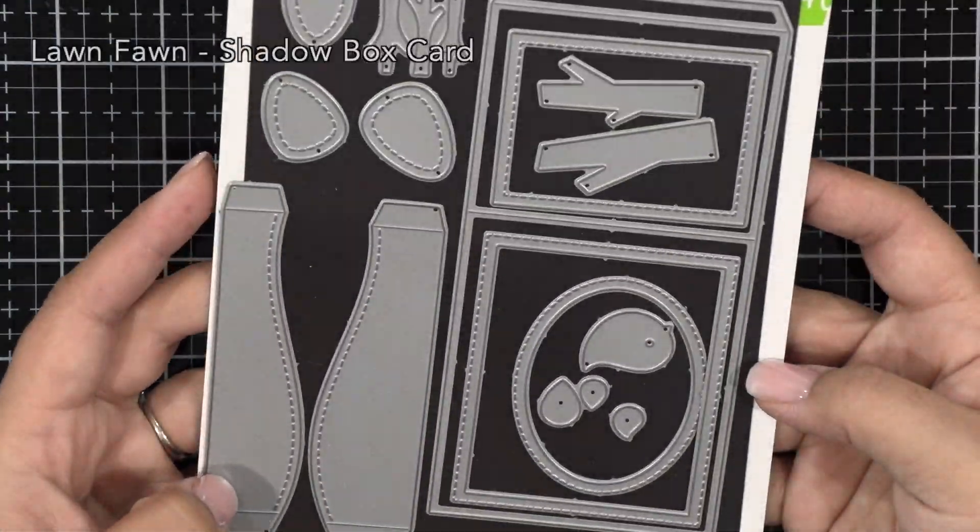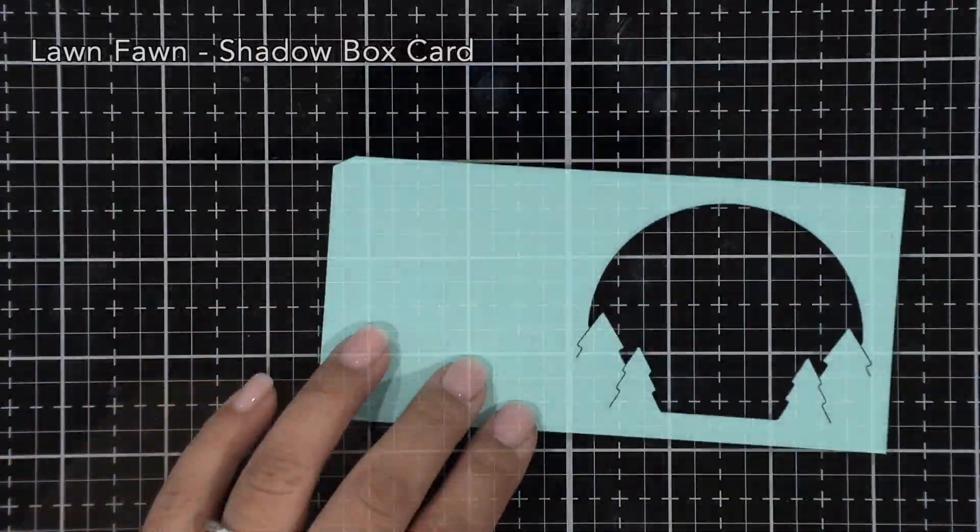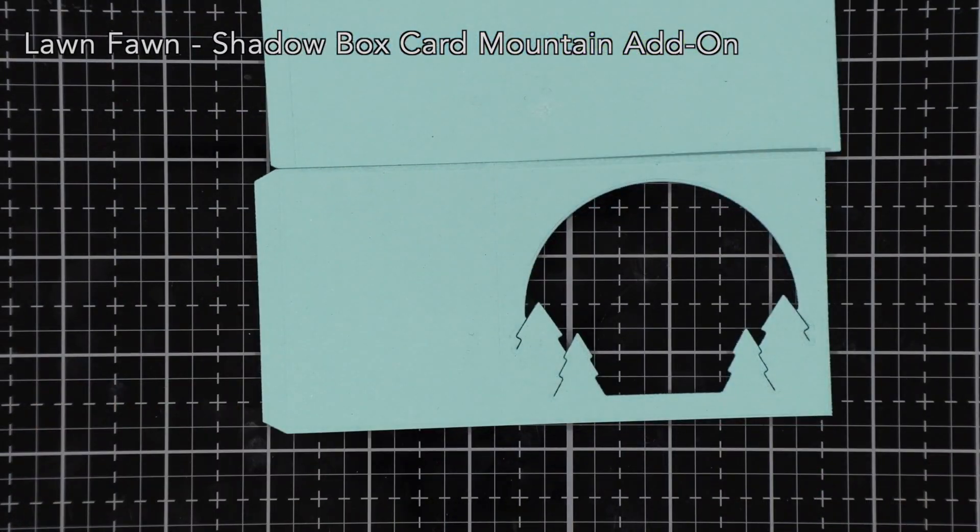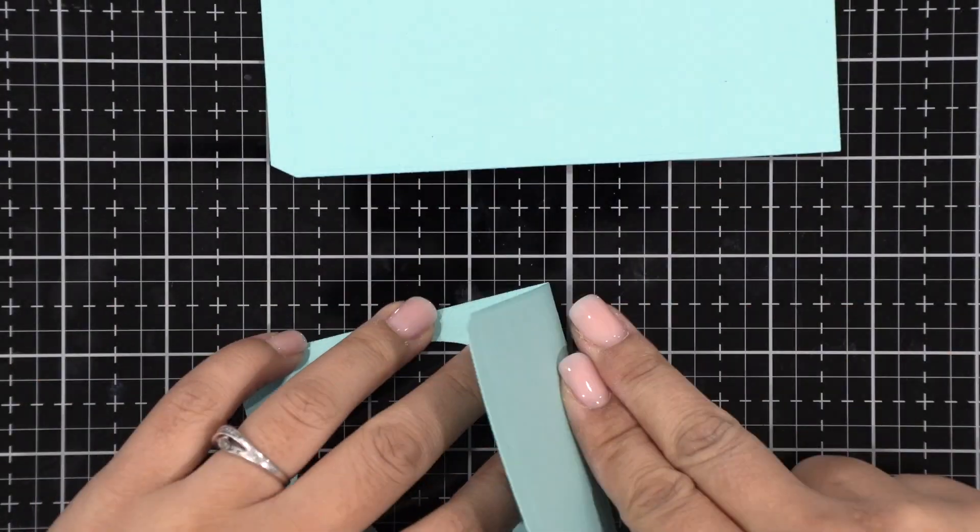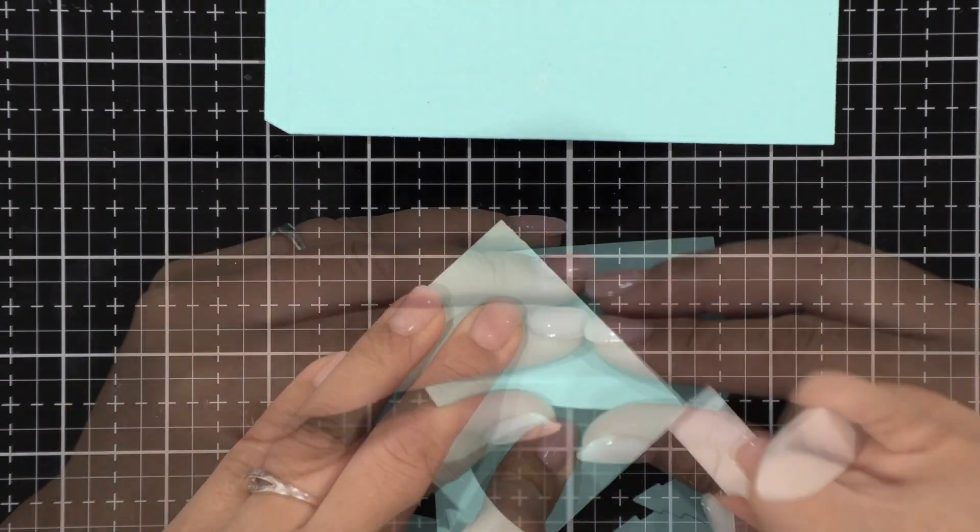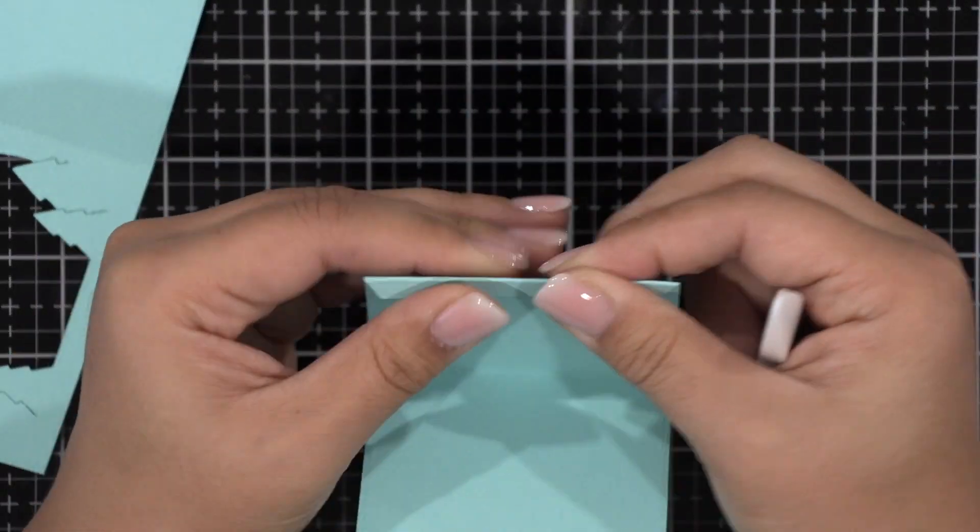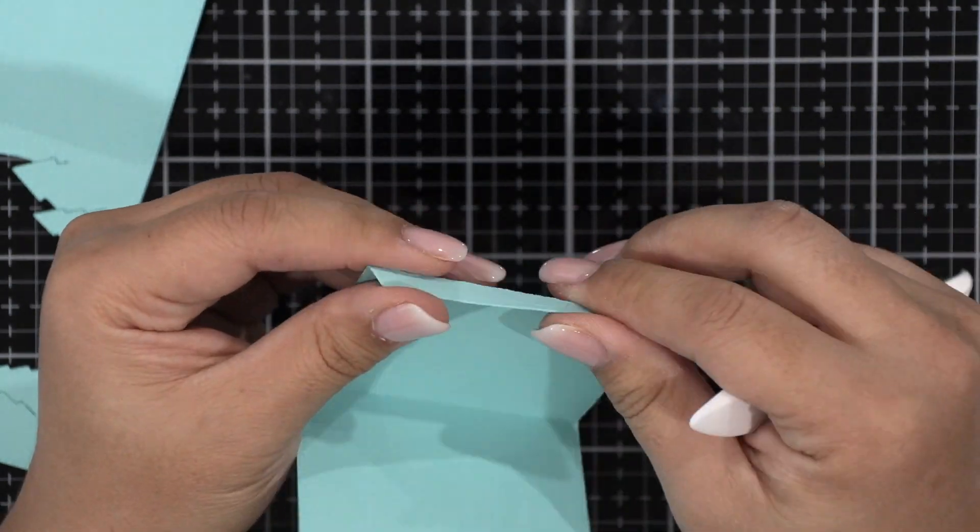Using the shadow box die, I'm going to cut the box die twice to get two panels using mermaid cardstock. Then I'm going to use the mountain add-on to cut the front to create this window with the spruce trees. Then I'm using my bone folder to fold and reinforce all of these score lines to create my box.